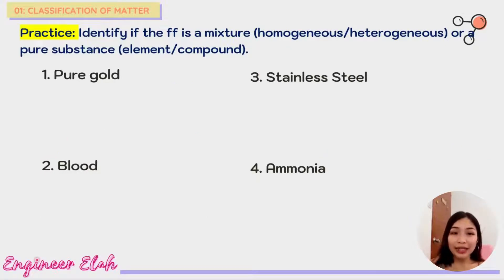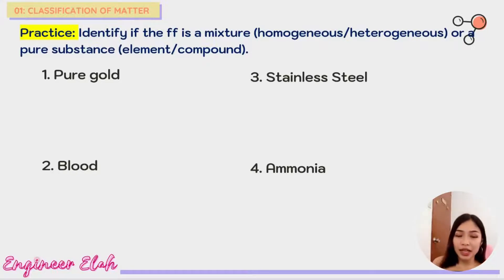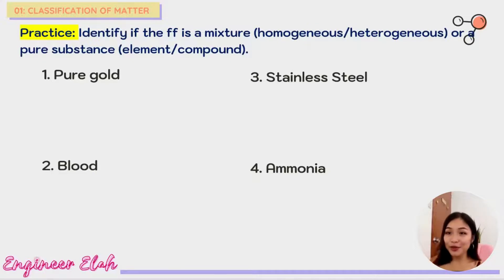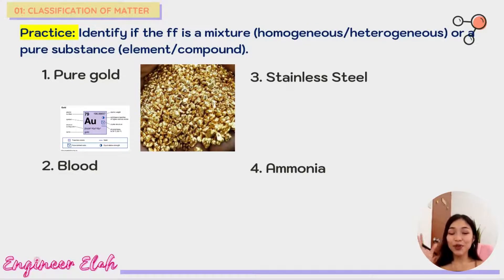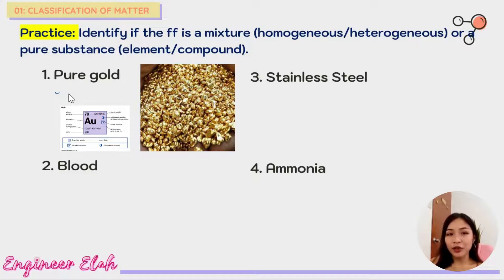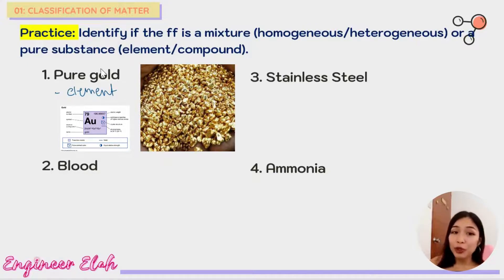We are going to identify whether the following is a mixture — homogeneous or heterogeneous — or a pure substance — element or compound. Number one: pure gold. This means it is purely gold with nothing else mixed in. If your answer is element, then you are correct. Gold can be found in the periodic table of elements, and since it is pure gold, there is nothing else combined with it — so it is an element.